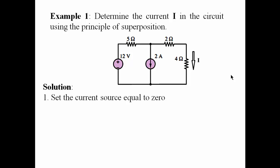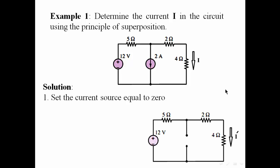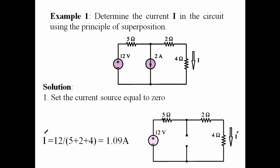Example 1: Determine the current I in the circuit using the principle of superposition. At the beginning, we are going to set the current source equal to 0, and we obtain this circuit diagram. The current source is set to 0 by replacing it with an open circuit. Now we just need to find the current I that results from only this voltage source, and we can obtain that by simply dividing 12 by the sum of these three resistances.